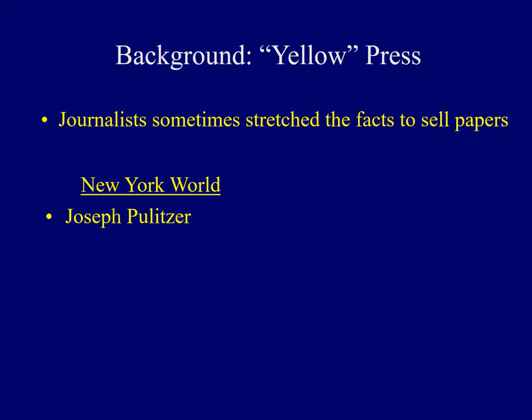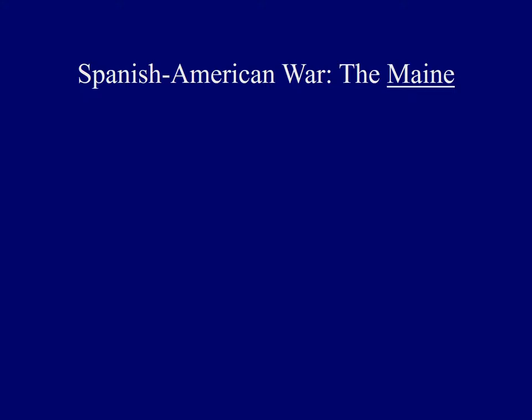The President of the United States during this time was William McKinley. The reason why the American people even knew about what was going on in Cuba is because of the so-called Yellow Press — a series of journalists who often stretched the facts in order to sell newspapers. There were two major newspapers, the New York World and the New York Journal, engaged in a titanic duel of circulation. They began to report many of the atrocities, some of which were true and some of which weren't, taking place in Cuba. The New York World was run by Joseph Pulitzer, and the New York Journal was operated by William Randolph Hearst.